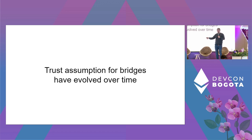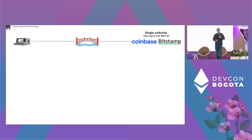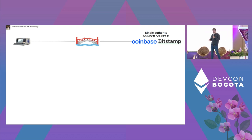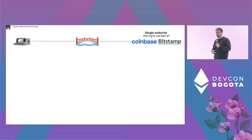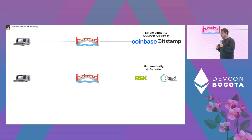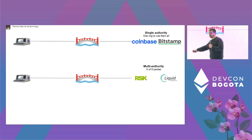This trust assumption has evolved over the years — after all, we've used bridges for the past 10 years for cryptocurrency exchanges. The first way was a single authority: Coinbase, Bitstamp, Kraken. You lock funds in Coinbase, they have custody and are responsible for protecting the assets — today they protect about 10% of all cryptocurrency assets. Then came multi-authority bridges: instead of trusting just Coinbase, could we trust five out of nine validators?